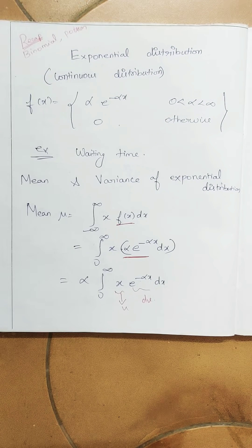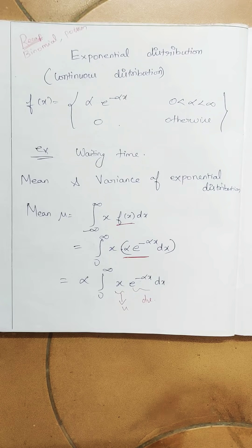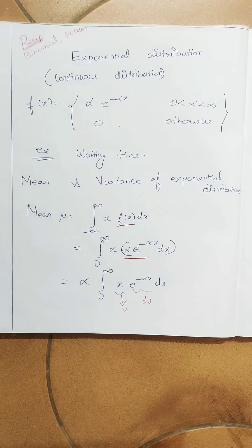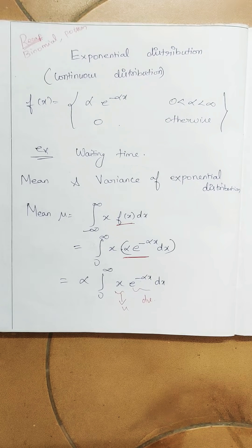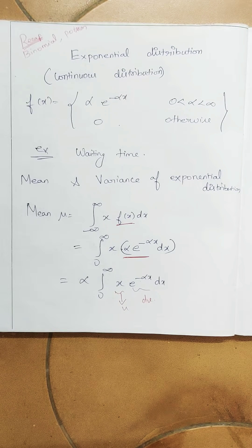Hello everyone. I hope you have seen the previous recording. So far we have seen probability basic concepts, random variable, discrete random variable, and in discrete random variable we have seen two versions: one is binomial, the other one is Poisson. I want you to write down the formulas for all the distributions together so that will be easy for you to refer. For binomial, the probability is nCx · p^x · q^(n-x), and for Poisson it is e^(-m) · m^x / x!.